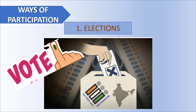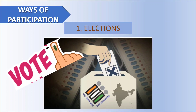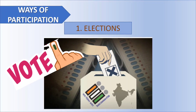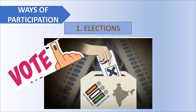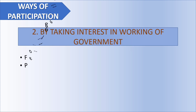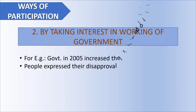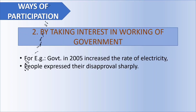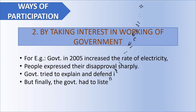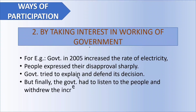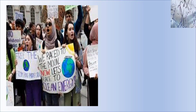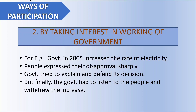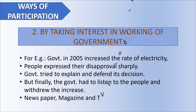Another way of participating is by taking interest in the working of the government. For example, in 2005, there was a sudden increase in electricity rates. People were not convinced by this government decision and started expressing their disapproval. The government kept trying to defend its decision, but people didn't accept it. Finally, the government had to listen to the people and withdrew the price increase, slightly decreasing the price.